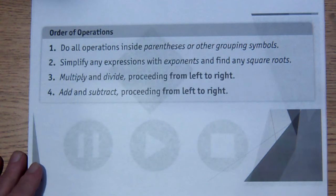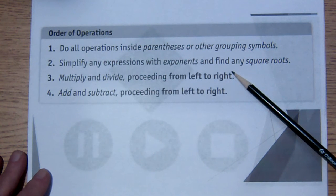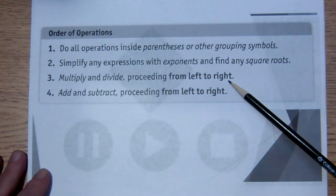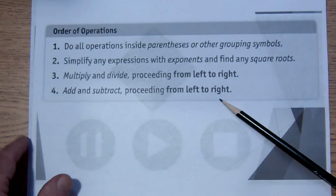Last but not least, the order of operations. We've covered this before, but we'll remind you that we do parentheses or other grouping symbols always first. Then we do exponents and do any square roots. Absolute values we'll talk about later following this first camp. Then we will multiply and divide proceeding from left to right and finally we will add and subtract proceeding from left to right.